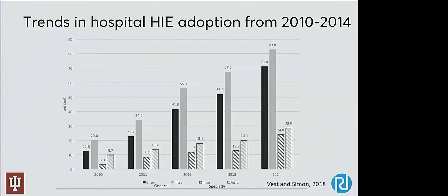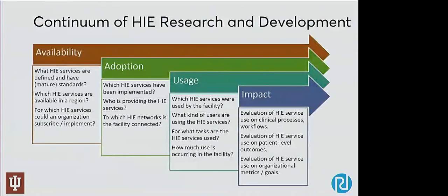The source of data for many adoption studies is self-reported data from the American Hospital Association's IT supplement, where the hospital raises its hand and says yes, we engage in this activity. However, it doesn't really tell you any of the details. I'm interested in what I call the continuum of HIE research and development — spanning from the availability of a new operational service, to hospitals adopting that service, to how it is actually used and by whom, and ultimately what is the impact on tangible outcomes at the patient, workflow, or organizational level.